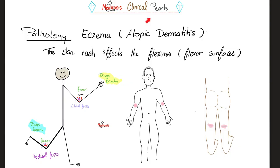Is this clinically relevant? Very relevant. There is a disease known as eczema or atopic dermatitis with an eczematous rash that affects flexor surfaces. That's why you will see it in front of the elbow but behind the knee — because your upper and lower extremities are opposites, having rotated differently during embryological development.